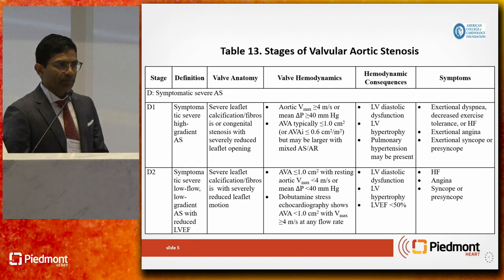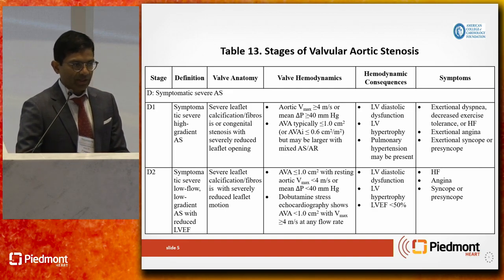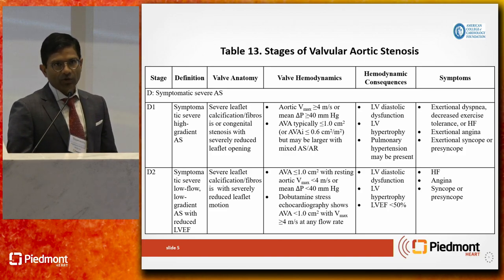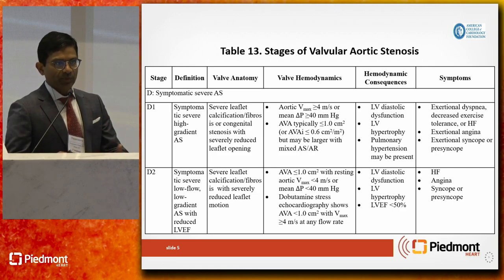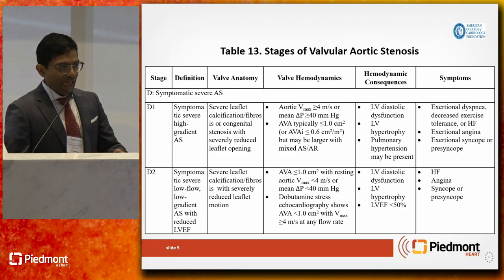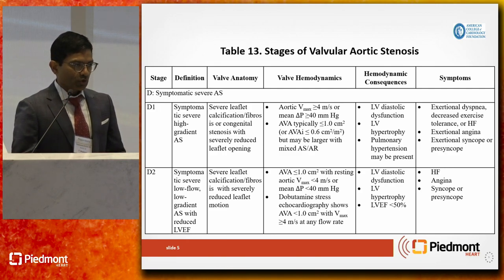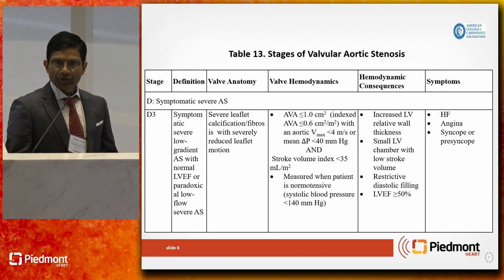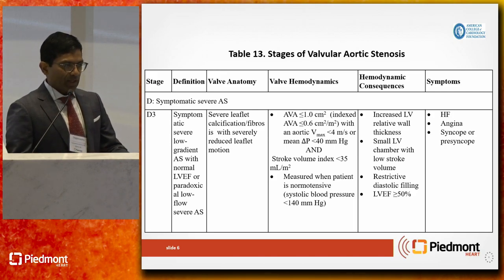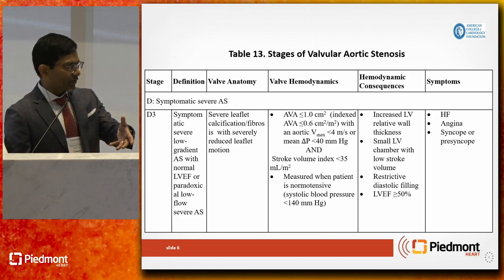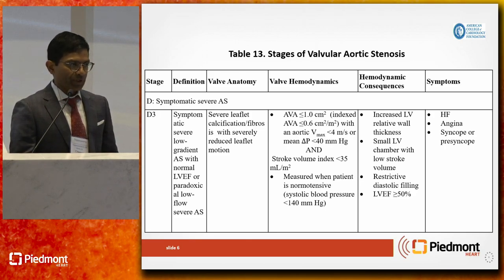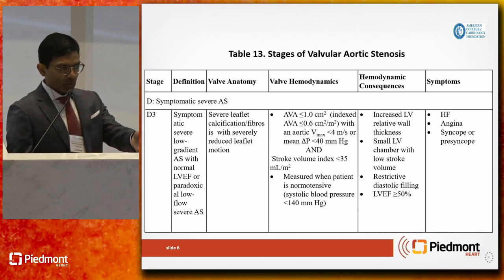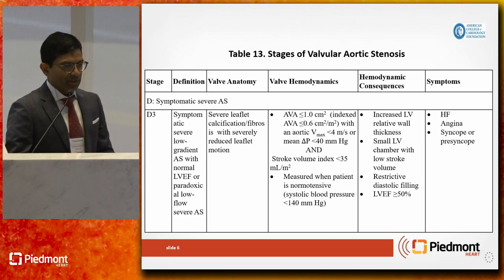The D2 patient is the patient with a low ejection fraction — less than 50%. They have to have some pathology of the aortic valve; if the aortic valve looks completely normal, it's not aortic stenosis. The valve has to be calcified, bicuspid, fibrotic, thickened, rheumatic — something abnormal. The valve area is less than one but gradients are low. D3 is the same patient but with a normal ejection fraction. The guidelines state the stroke volume index is low — less than 35 milliliters per meter squared — which is easy to calculate on a standard echo. There is also a category where patients can have a normal stroke volume and still be D3.